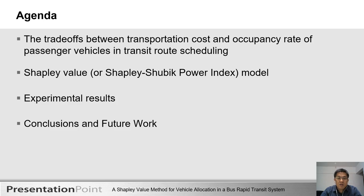I have divided my presentation into four main parts. First, I will talk about the trade-off between transportation costs and the occupation rates of passenger vehicles in transit through scheduling. Second, I will show you how this study applied the Shapley-Shubik power index to improve BRT bus scheduling. Third, I applied F1 bus route data of Xiamen city in April 2017 to verify the proposed model. And finally, I would like to finish off by talking about some of the future work we need to improve the model.